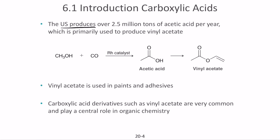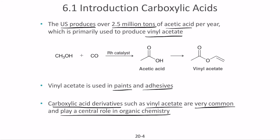In the U.S. we produce about 2.5 million tons of acetic acid per year. Most commonly it's used to prepare vinyl acetate, which is used in paints and adhesives — it has good sticking and adhesive properties. Carboxylic acid derivatives such as vinyl acetate are very common and play a central role in organic chemistry and sometimes in biochemistry as well.